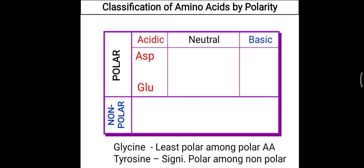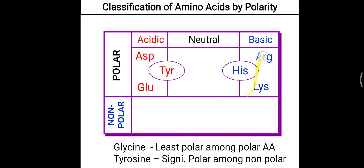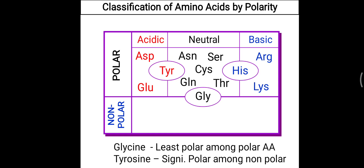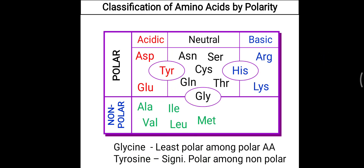That covers the classification of amino acids based on polarity. Based on polarity, they are classified into two categories: polar and non-polar. Acidic amino acids are aspartic acid and glutamic acid; basic amino acids are HLA — histidine, lysine, and arginine. Neutral amino acids include asparagine, serine, cysteine, glycine, threonine, and glutamine. Importantly, glycine is the least polar among the polar amino acids — this is a common MCQ question. Similarly, tyrosine is significantly polar among the non-polar amino acids because it contains a phenol group.